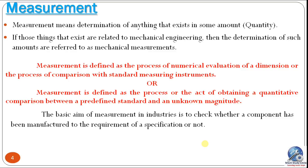Why do we need measurement? The basic aim of measurement in industry is to check whether a component has been manufactured to the requirements of a specification or not. The manufacturer must check whether components are made with correct dimensions, otherwise one product will have a different dimension than another, affecting product quality and the consumer.